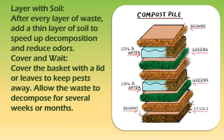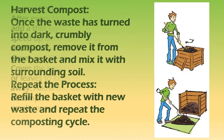To harvest compost, first check if the material has turned dark, crumbly, and has an earthy smell. If it's ready, gently remove the top layers of the compost bin or basket, then sift through the lower layers. The fully decomposed compost can be separated and used for your plants. If you find any large, under-composted pieces, return them to the bin to break down further.